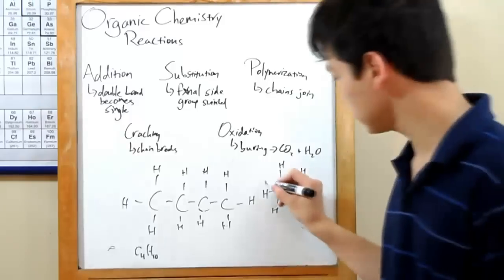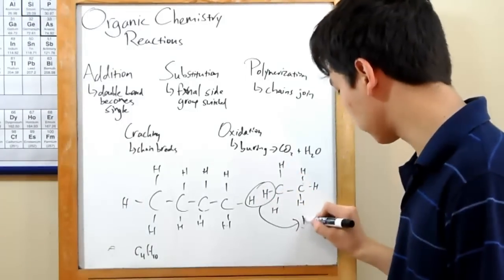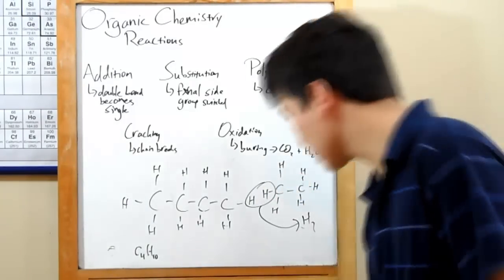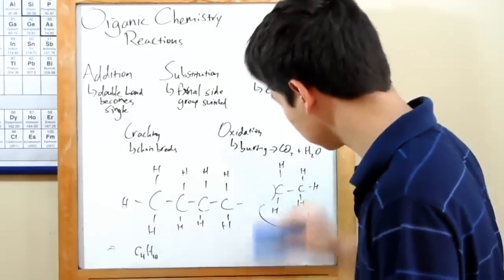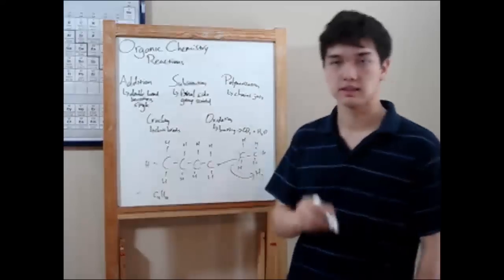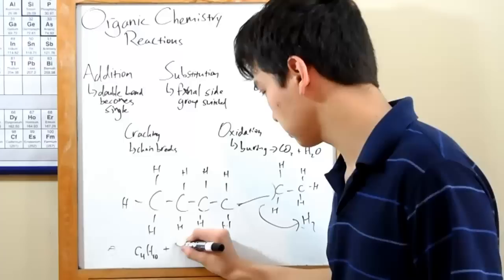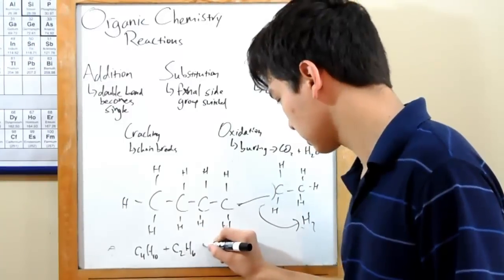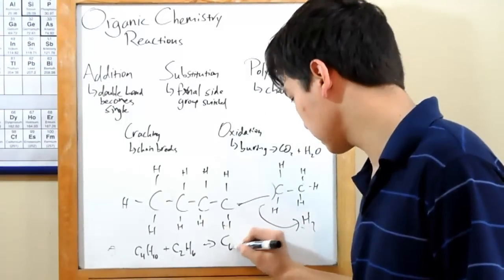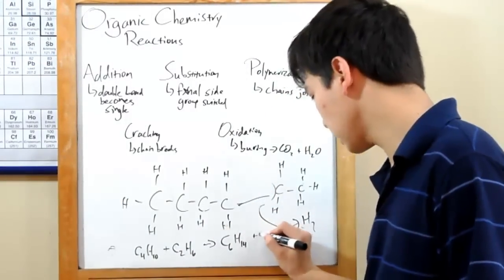What can happen is these two hydrogens can go off, form their own bond to make H2, and the carbons can join. This will create a longer six-carbon molecule, hexane. So C4H10 plus C2H6 going to C6H14 and H2.